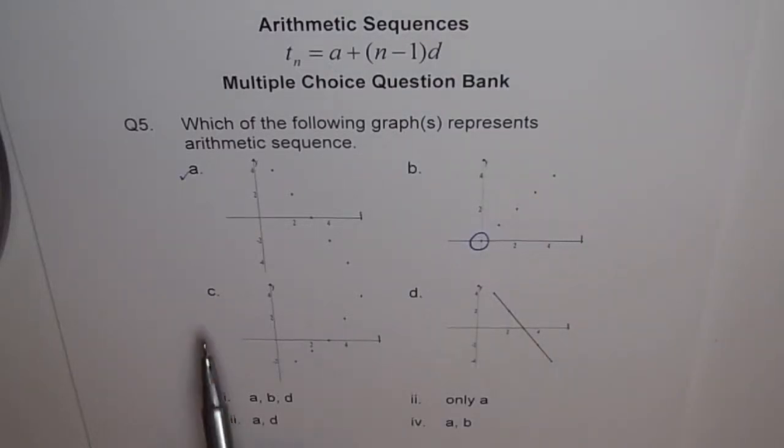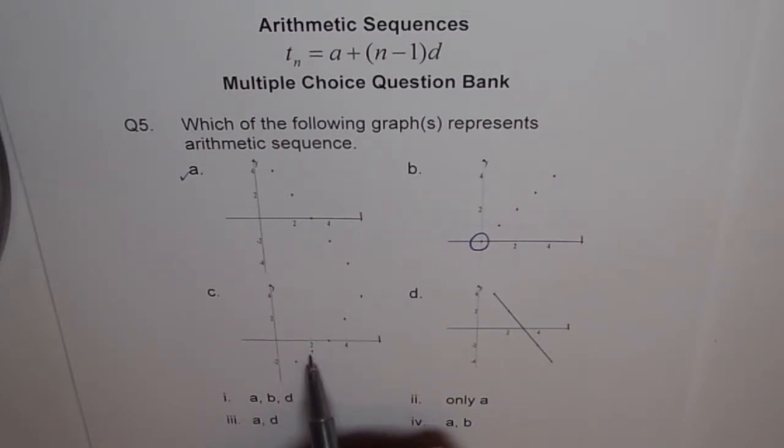Now let's look into C. So at 1 we have a value minus 2, at 2 we have minus 1. So it goes up by 1 and next it again goes up by 1. But this value goes up by 2. So the common difference has changed. Here it was plus 1.